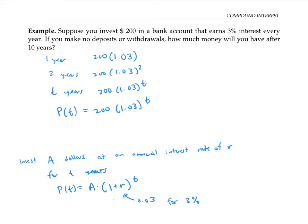Going back to our specific example, after 10 years the amount of money is going to be p(10), which is 200 times 1.03 to the 10, which works out to $268.78 to the nearest cent.